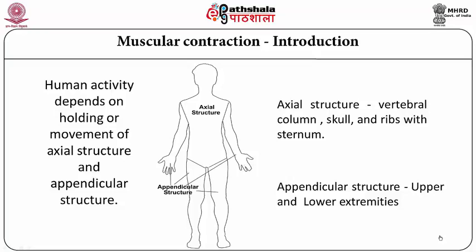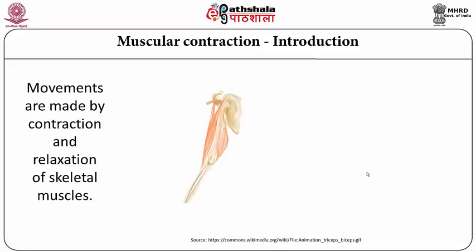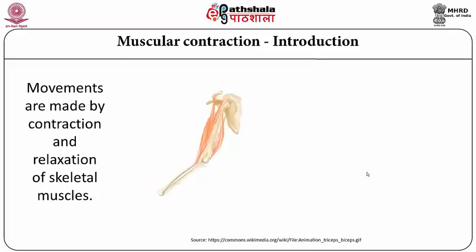Human activity depends on holding or movement of the axial structure and appendicular structure. By axial structure we include the vertebral column, skull, ribs, and sternum. And the appendicular structure includes the upper and lower extremities. Here there is a movement of the elbow on screen — there are two muscles, one is biceps and another is triceps — and the flexion of the elbow is going on.